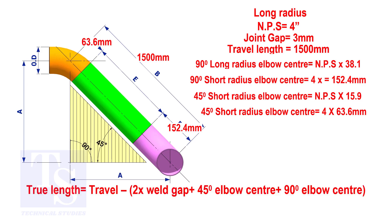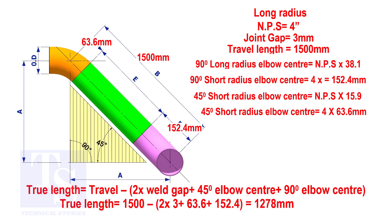Apply the calculation. The true length of the pipe is 1278 millimeters.